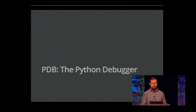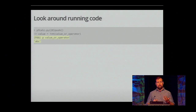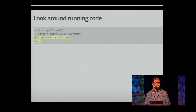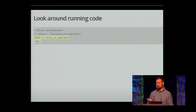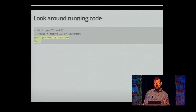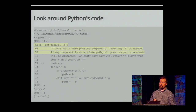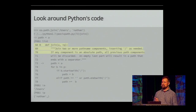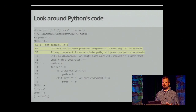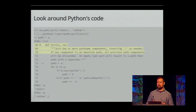So what sort of things can you actually do with PDB? You can look around running code. This is a little calculator program. I'm just looking at what the value of a variable is. More interestingly, you can also look around Python's code. If I wanted to know what os.path.join does when I actually call it, I can stop Python's execution inside of this function without editing files inside of my system Python, and discover that it's actually calling a module called POSIX path.